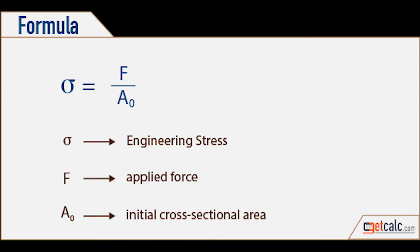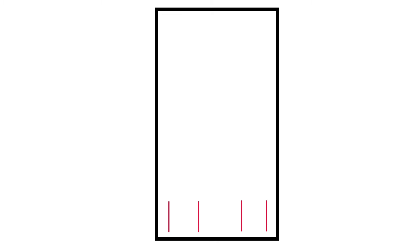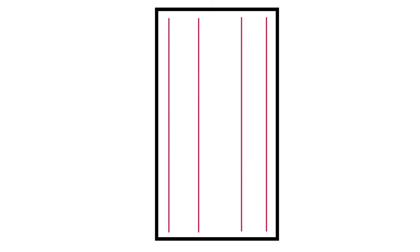Stress in engineering is defined as the internal forces acting through the cross-section of a material. Stress is represented by the Greek letter sigma and equals the internal forces of the material divided by the cross-sectional area. Consider a piece of metal that is perfectly symmetrical — if we subject it to an external force, the stresses developed inside would be evenly distributed throughout its entire cross-section.